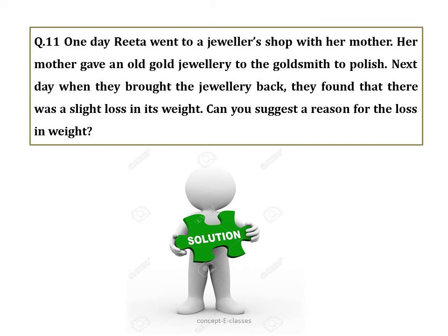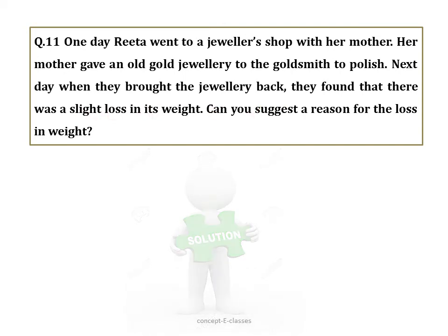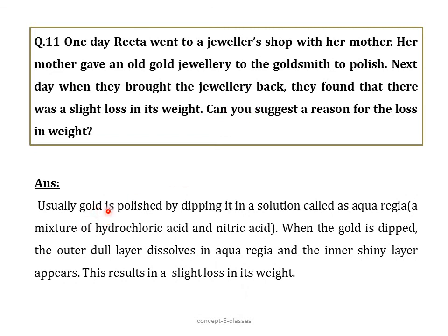Question number eleven: one day Reetha went to a jewellery shop with her mother. Her mother gave old jewellery to a goldsmith to polish. Next day they found a slight loss in weight. The reason is that gold is dipped into aqua regia — a mixture of hydrochloric acid and nitric acid — which dissolves the outer dull layer, revealing the inner shiny layer, resulting in a slight loss in weight.